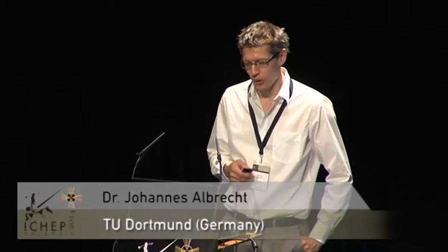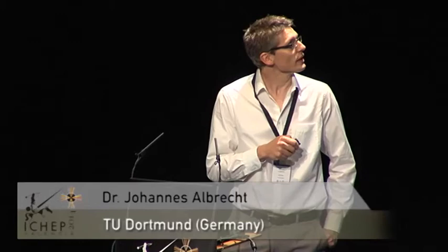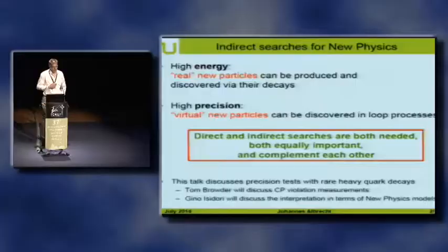If you put that into context, there are two orthogonal ways to search for new physics. You can search for new physics via the decays of new heavy particles — what we call direct searches, the high energy frontier. And then you can search for new physics via the effect of that new physics in loop processes, where heavy new particles occur as virtual particles. This is what we call the precision frontier.